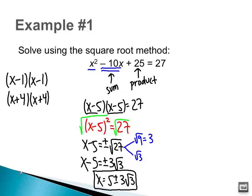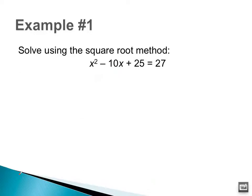Now with completing the square, most of the time it's not going to be the case that the left side of the equation is a perfect square trinomial. So let's look at the next example. Are there two numbers that multiply to negative 9 and add to be 16? No. So this is one of those cases where the left side is not a perfect square trinomial, so we're going to have to complete the square.